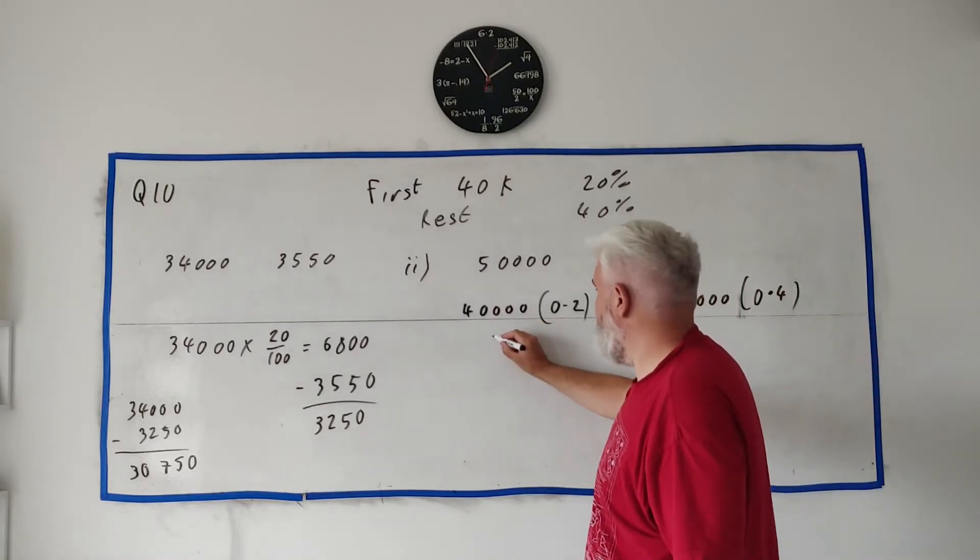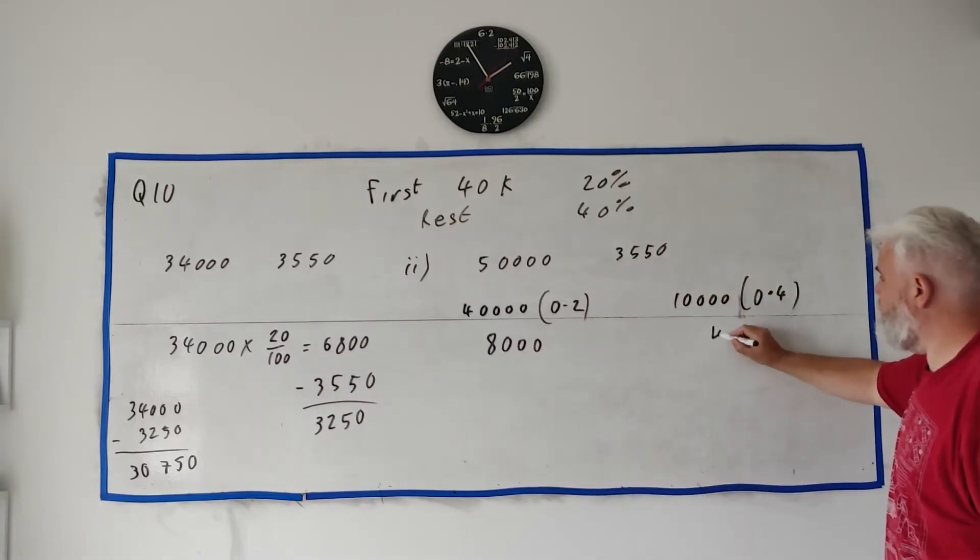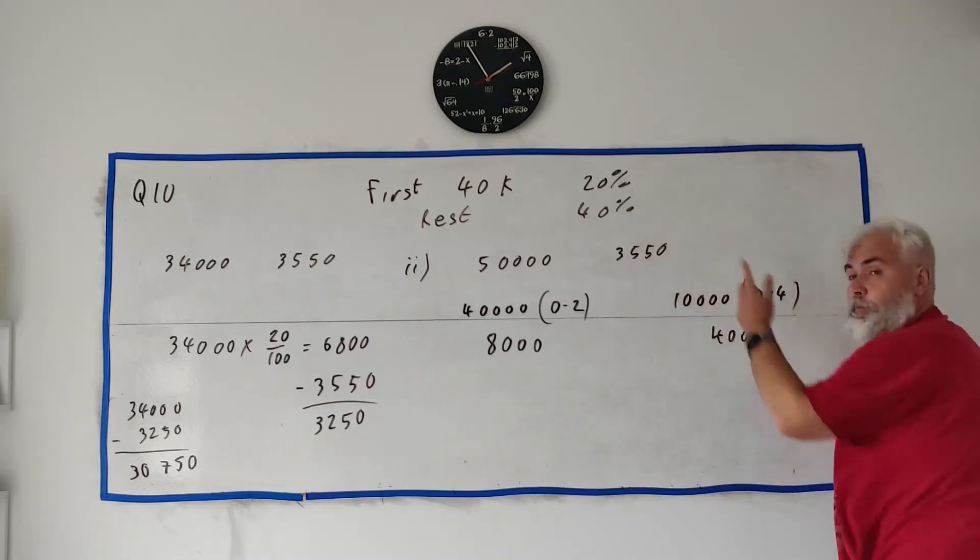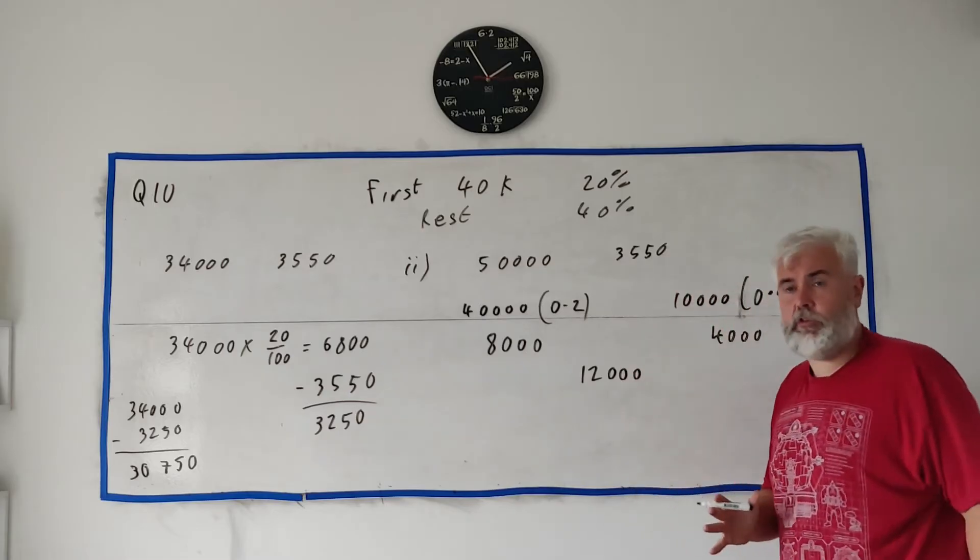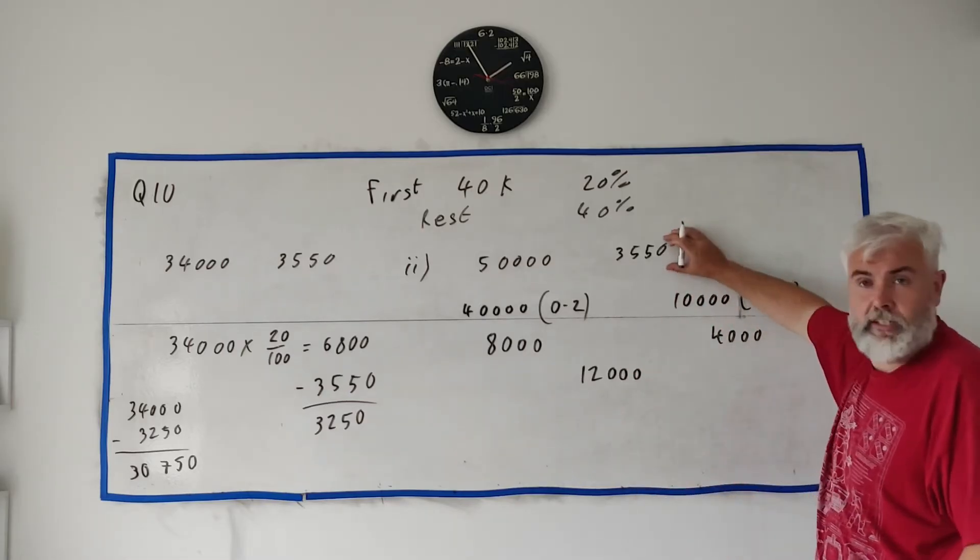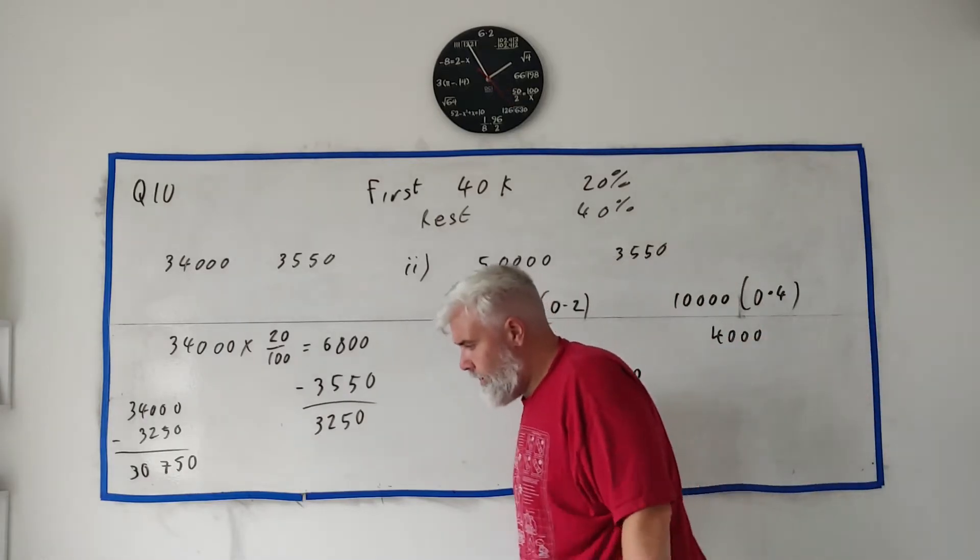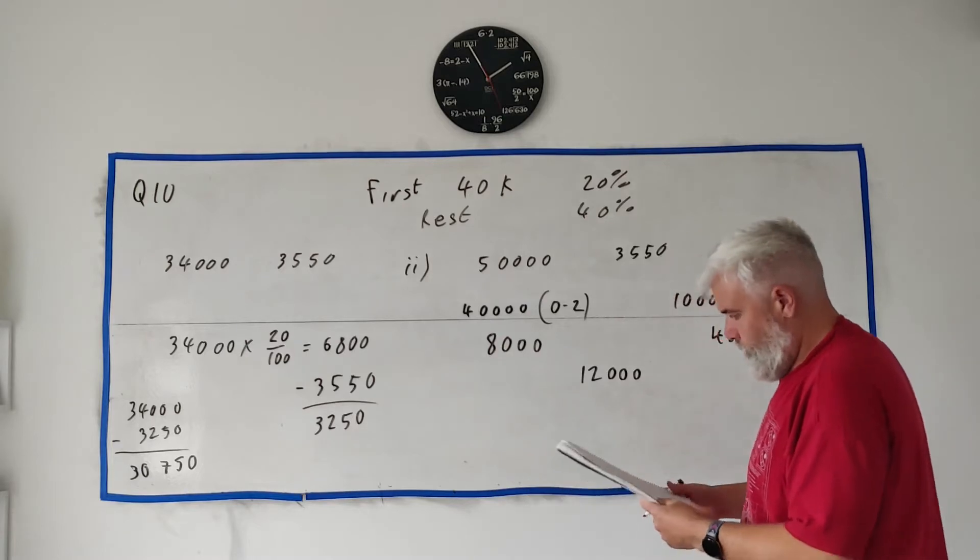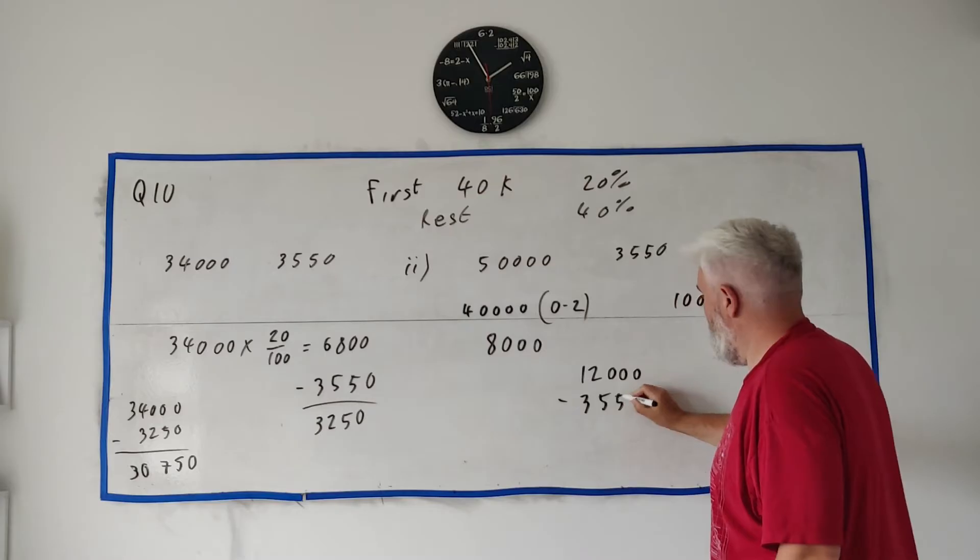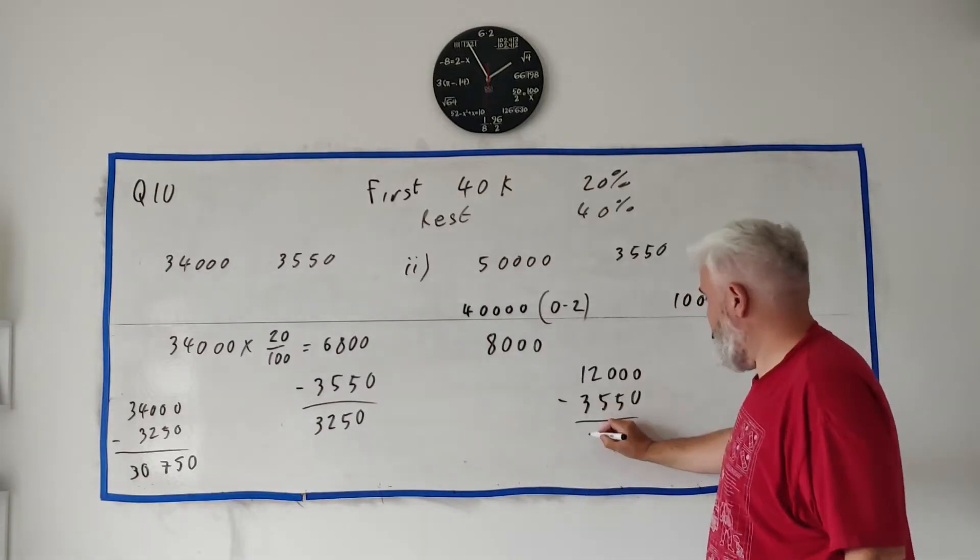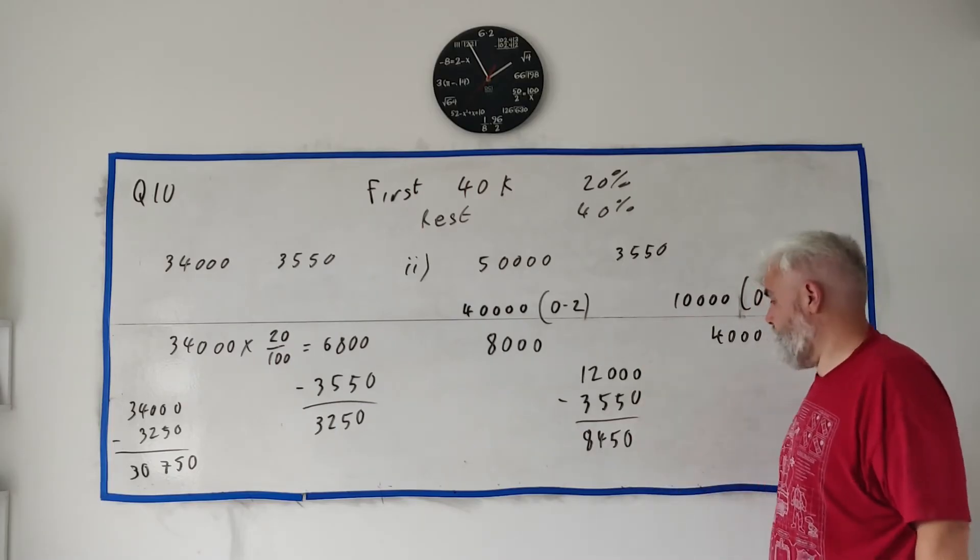So how much tax does she have to pay? 20% of €40,000 is €8,000. She has to pay that tax. But then she also has to pay another €4,000 from the higher bracket. Add these together, we get €12,000. That's how much tax she owes before her tax credits. Do the tax credits at the end. Take the tax credits away.